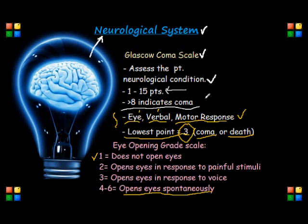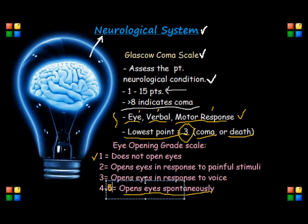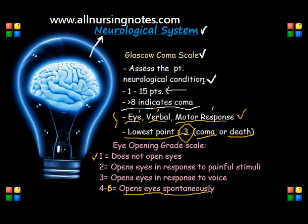How does this apply on the NCLEX? Knowing and remembering that a score lower than 8 on the scale indicates a coma allows us to analyze NCLEX questions and use our holistic reasoning to choose the correct answer. I will be going over more NCLEX content in relation to holistic learning in the next few videos.